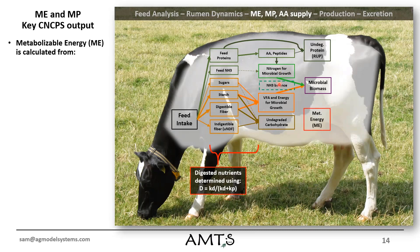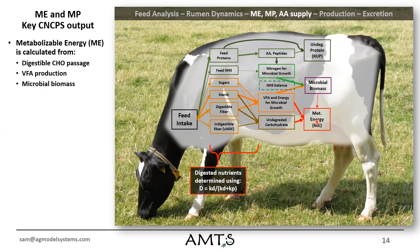Next, we're moving out of the rumen. We can now calculate ME and MP. Starting off with ME: there will be some ME coming from undegraded carbohydrates — so think about the undegraded starch portion, a portion of which will be digestible in the small intestine and does provide some ME. And then the VFA from the digestion of the carbohydrates in the rumen will also provide metabolizable energy. There's also a small amount of energy coming from microbial biomass, relatively small. And then there's also a portion that comes from the feed that really doesn't do much in the rumen — we typically think of dietary fats in this way, as their energy availability doesn't typically change a lot — contributing to metabolizable energy.